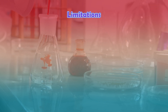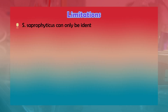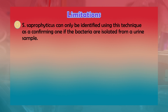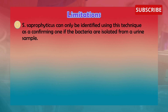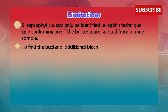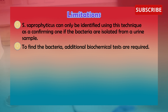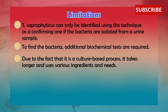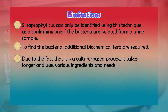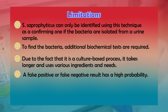Limitations of the novobiocin susceptibility test: Staphylococcus saprophyticus can only be identified using this technique as a confirmed identification if the bacteria are isolated from a urine sample. Additional biochemical tests are required to confirm the species of the bacteria. Due to it being a culture-based process, it takes longer and requires various ingredients and equipment. There is also a high probability of false positive and false negative results.